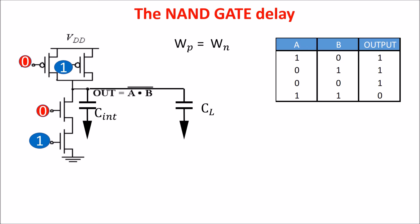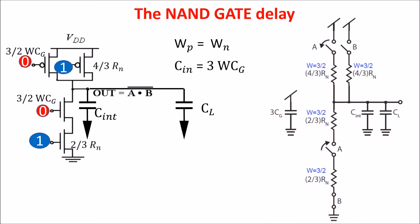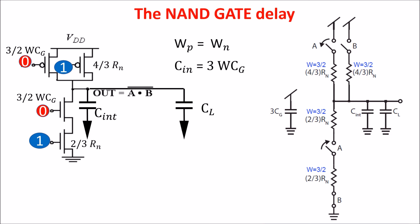Moreover, we want to have the same input capacitance of the inverter, which is 3WCgate, so P and N MOSFET have the same width, and the input capacitance has to be 3WCgate, so the width is 3/2W for every MOS. In this way, the resistance of the N MOS becomes 2/3Rn, and that of the PMOS is 4/3Rn.